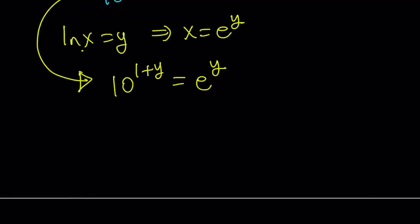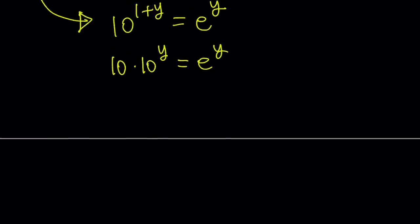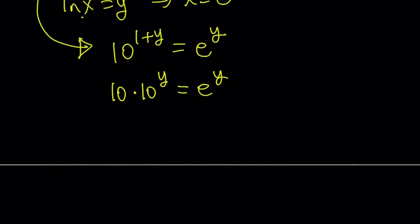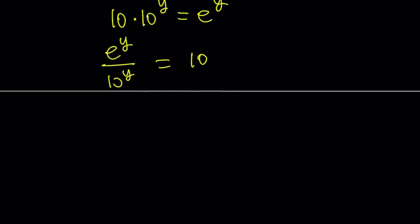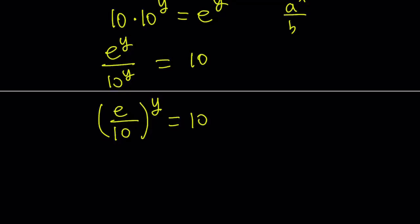Now 10 to the power 1 plus y can be written as 10 times 10 to the power y equals e to the power y. We can go ahead and put the variables on the same side by dividing both sides by 10 to the power y. So it's going to give me e to the y divided by 10 to the y equals 10. Since the numerator and denominator both have the same exponent, we can express them with a common exponent: a to the x divided by b to the x equals a over b to the power x.